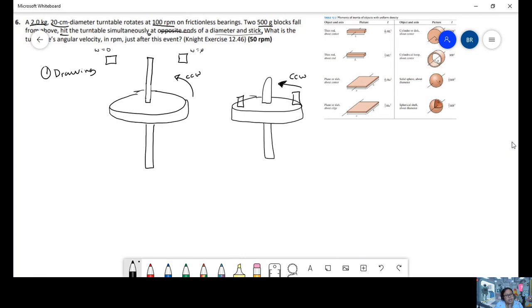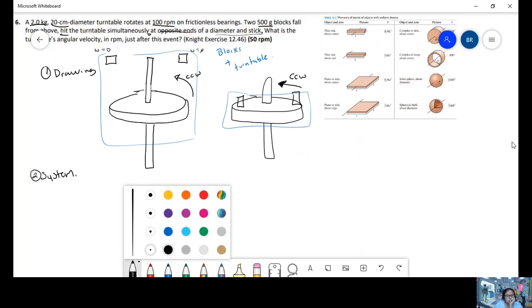Once we have our drawing, we have to identify a system. So my system is going to be both blocks plus turntable, these two objects together.